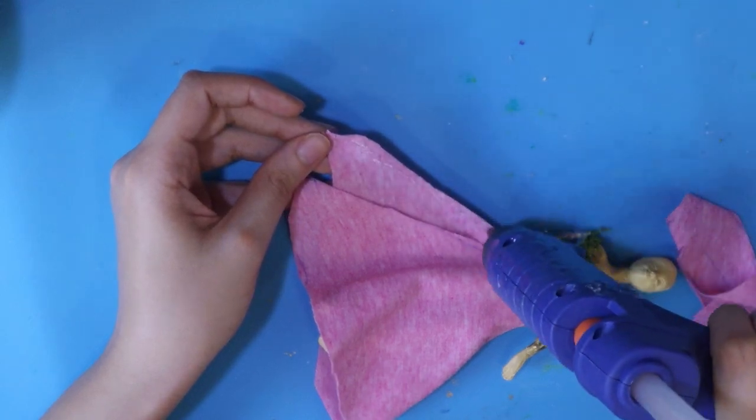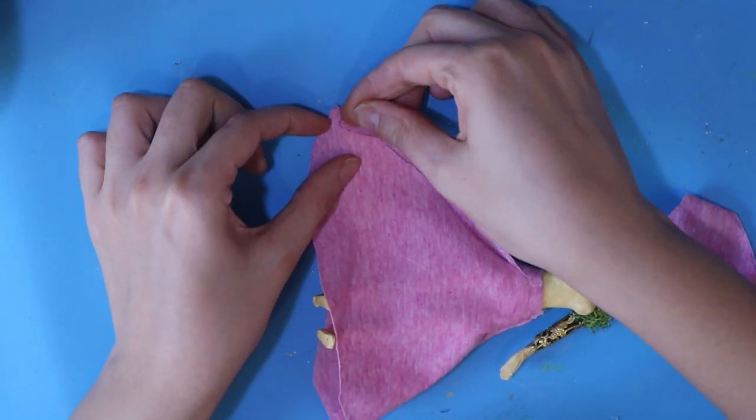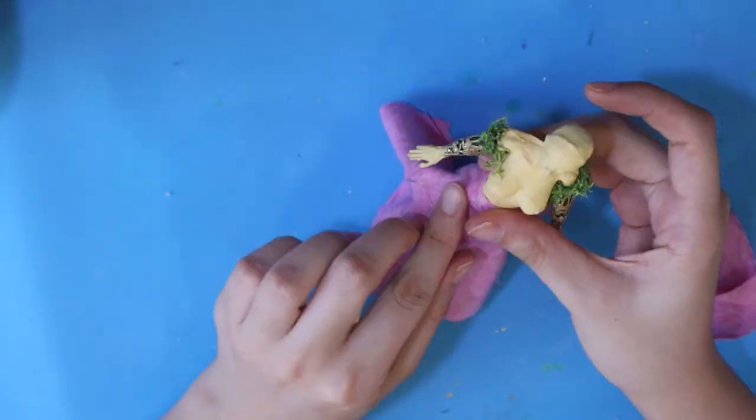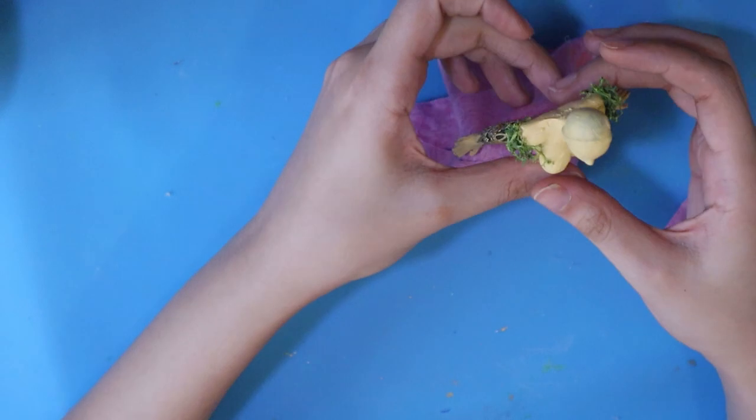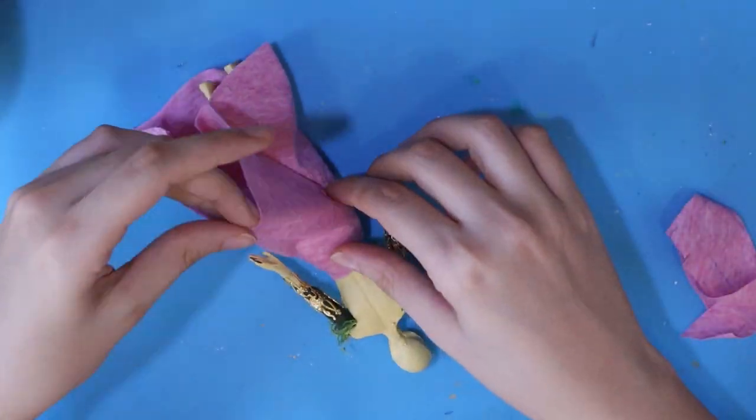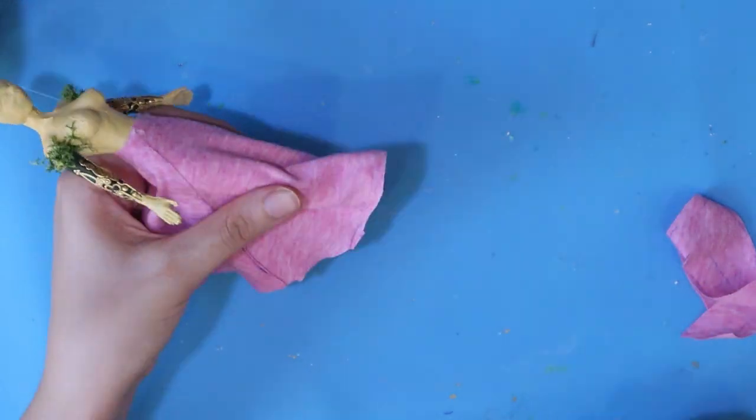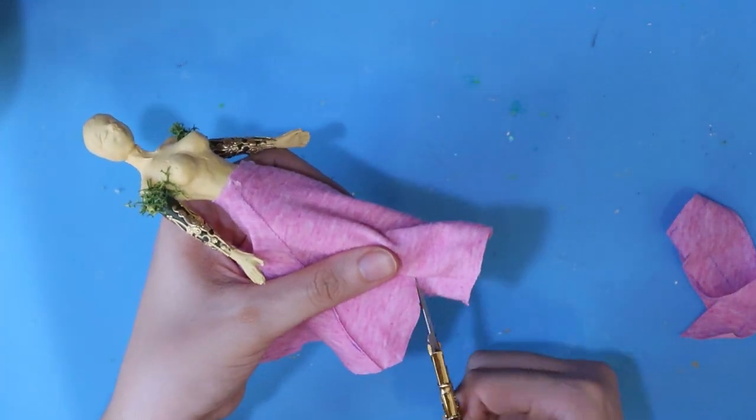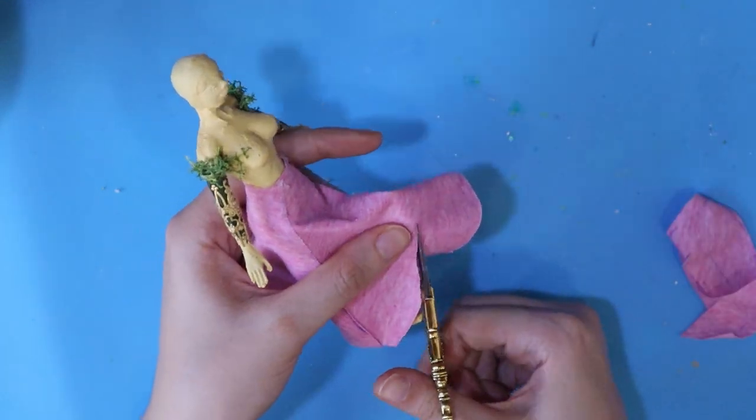It would have been much easier to use green piece of fabric, but I didn't have it at the moment. I want the front part of her gown to be shorter, so I do adjustments with scissors.